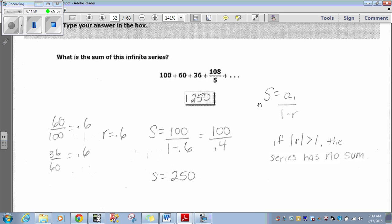So, what do we do here? So, the sum is a sub 1. A sub 1 is the first number of 100. Then, divided by 1 minus r. How do we find the r? That's the thing. In order to find the r, you take the second number divided by the first number, or the third number divided by the second number, or the fourth number divided by the third number. So, if we take here, the second number divided by the first number, we get 0.6. If we take the third, divided by it is 0.6. So, our r is 0.6.